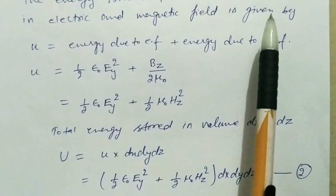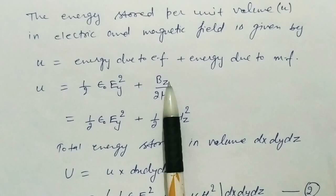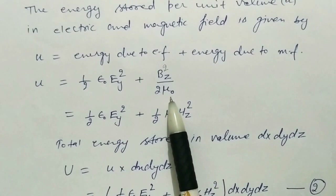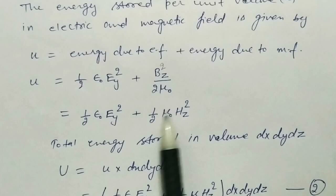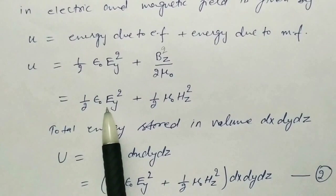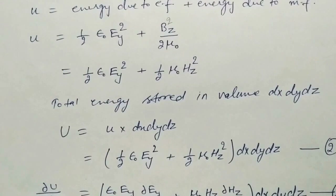The energy stored per unit volume: as you studied in class 12, the energy density stored in the electric field is half epsilon-naught E-squared, and the energy density stored in the magnetic field is B-squared upon 2 mu-naught. In terms of H, we can write this as half epsilon-naught E_y squared plus half mu-naught H_z squared. This is the energy density, and total energy is energy density multiplied by the volume element dx·dy·dz.